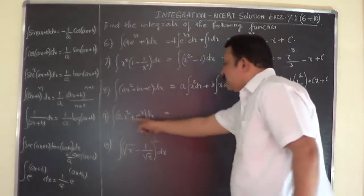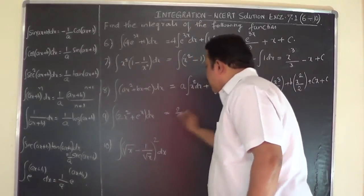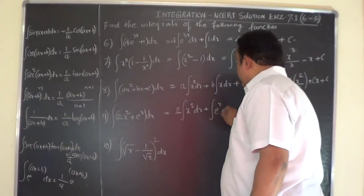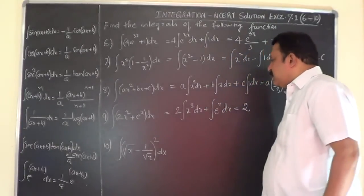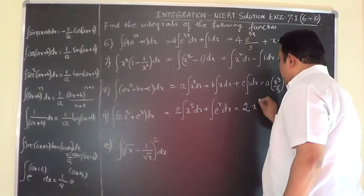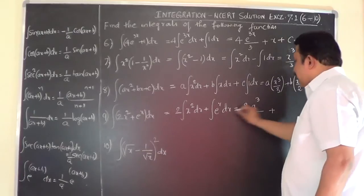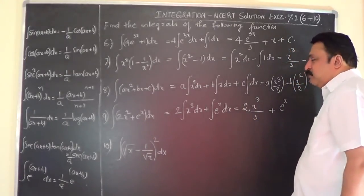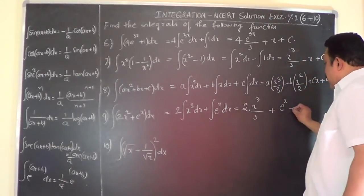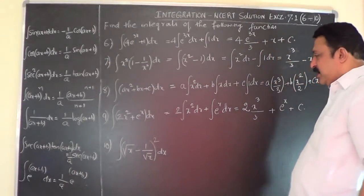Now this one — again we separate. There are two functions: 2 is a constant, write it outside the integral sign. So we have 2 integral x² dx plus integral e^x dx. We integrate: x^(2+1)/(2+1) gives x³/3, plus integral e^x dx is e^x itself, because differentiating e^x gives e^x. So the answer is 2x³/3 + e^x plus C.